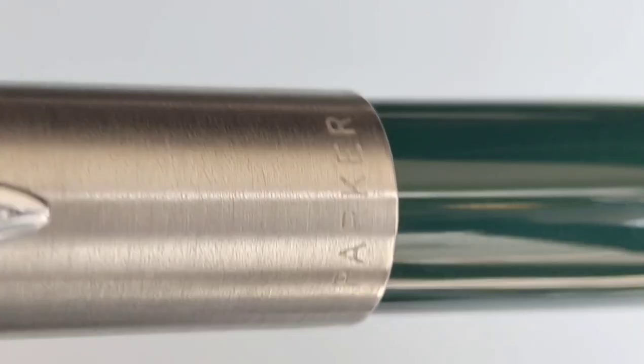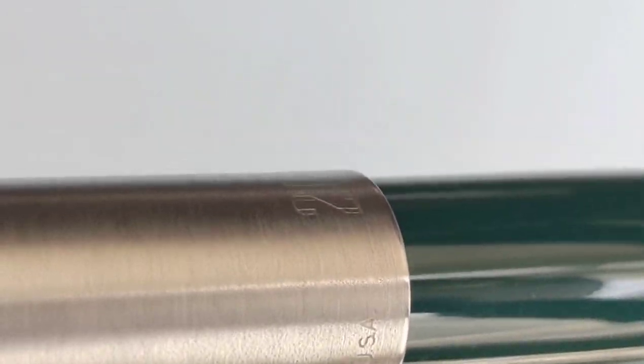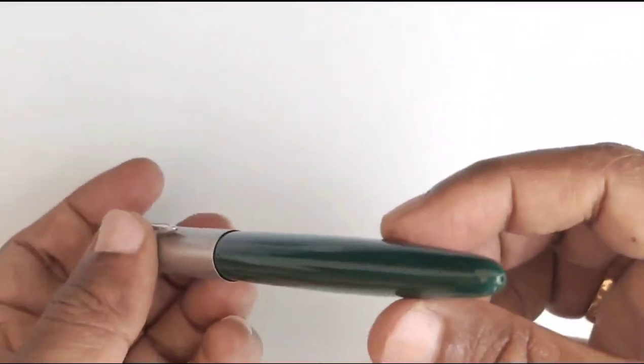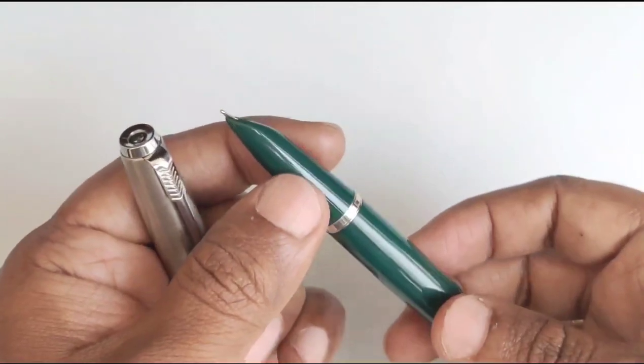We can see the imprint on the cap with the Parker name along with number 21. Some Parker 21s are launched with steel nib and some are launched with octanium nib. My 21 is with a steel nib.